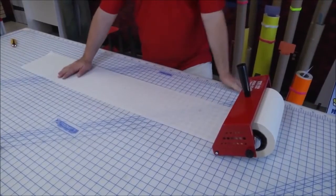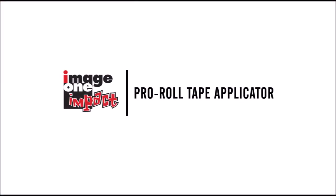So as you can see, there isn't a faster or easier way to apply bubble-free application tape every time. Be sure to ask your distributor for the TA Pro-Roll tape applicator from Image One Impact.